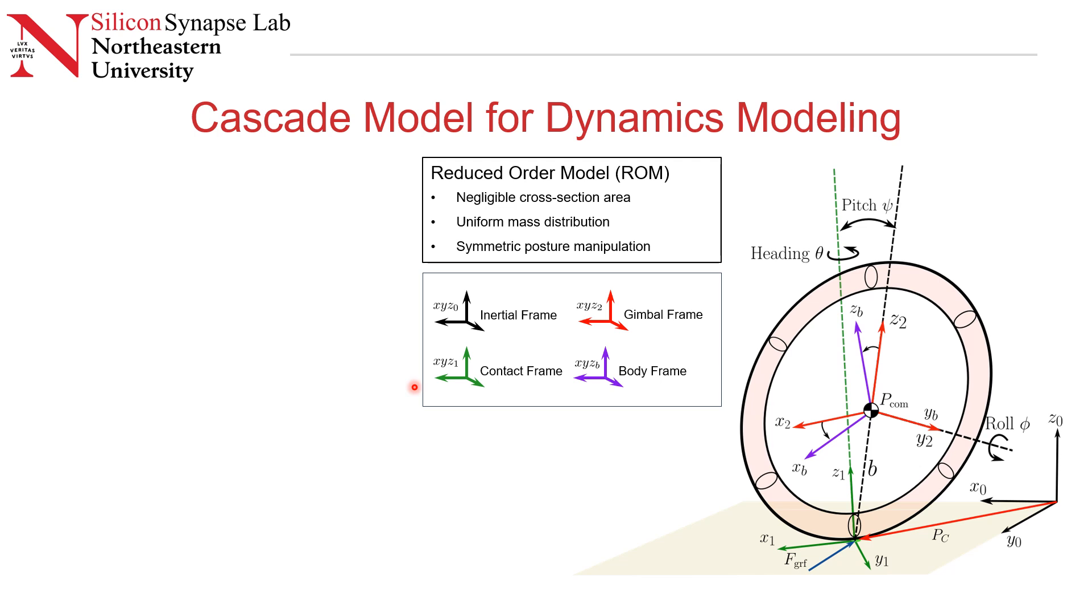We define the tumbling dynamics as shown here. We can define the change in the state of the robot, which is defined as the three Euler angles—roll, pitch and heading—the rate of change of these Euler angles, the position of center of mass and the velocity of center of mass in the inertial frame, as a function of the current state and the inertia of the robot.